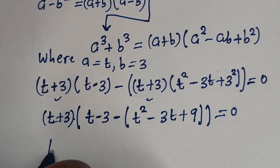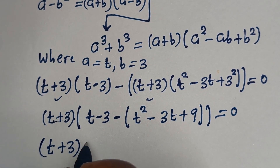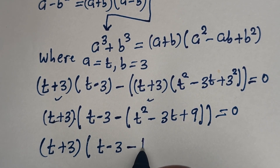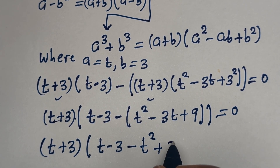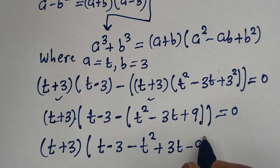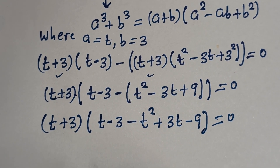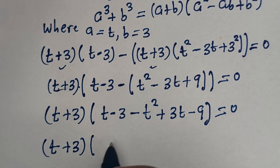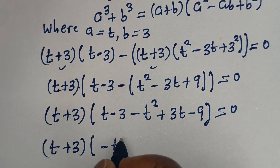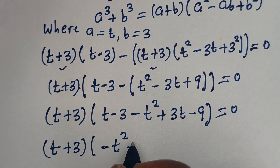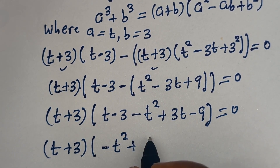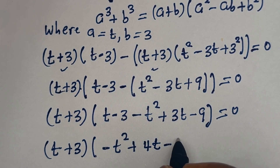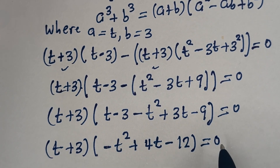We have t plus 3, bracket, bracket, t minus 3, opening with this negative we have minus t squared plus 3t plus t minus 9. Combining like terms, we have t plus 3 bracket bracket minus t squared plus 4t minus 9, equal to 0. So there are two cases here.